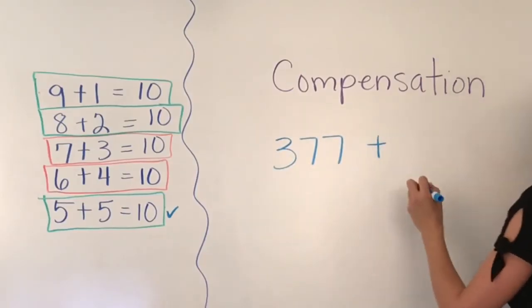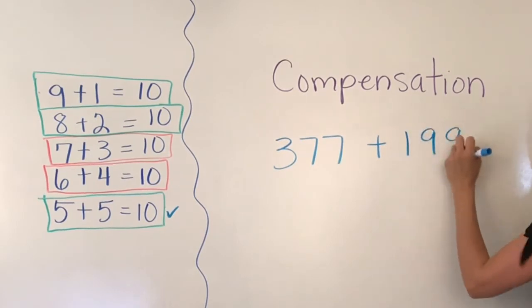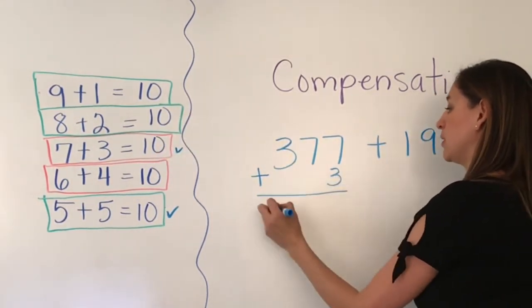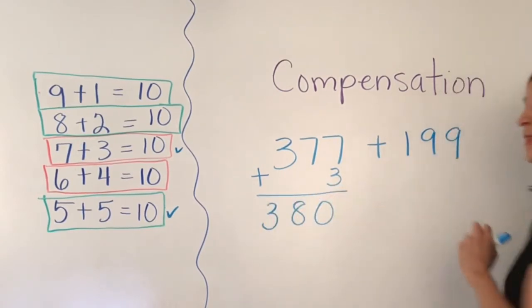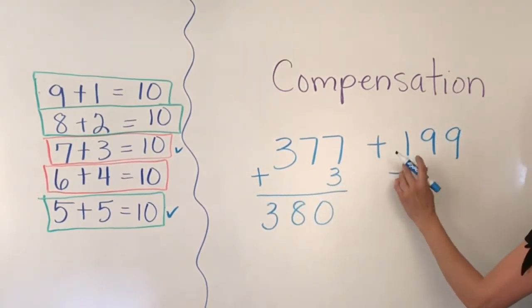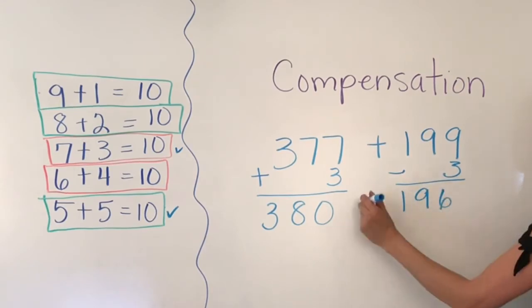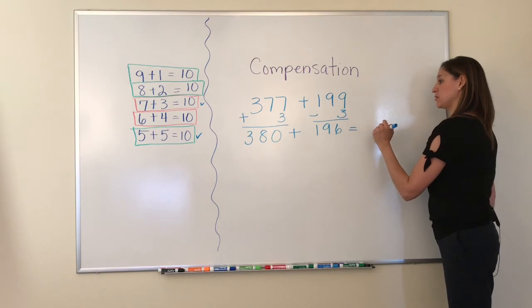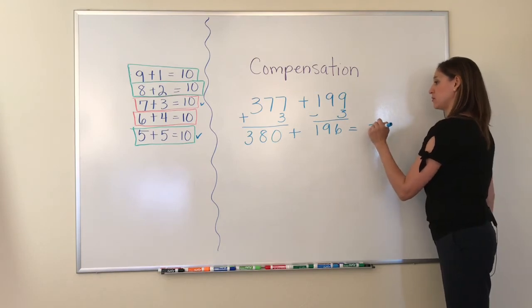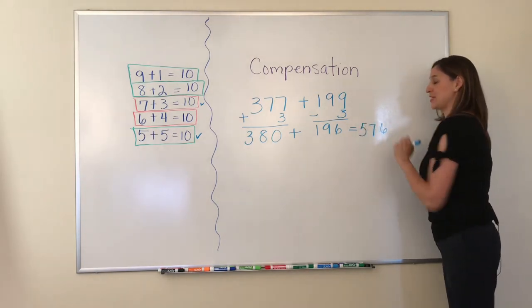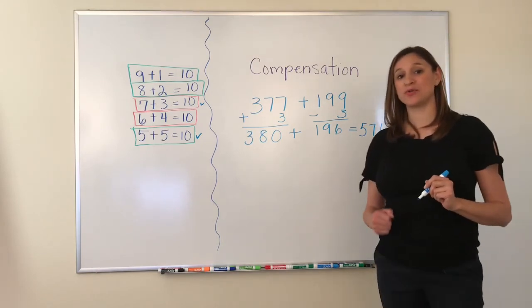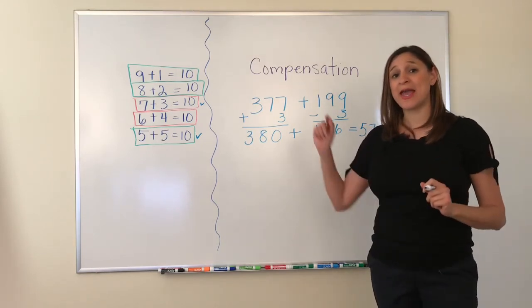For review purposes, I will show you how to compensate once again. Here I added another 3 to convert this into a friendly number, and I will subtract that 3 to the other side. My answer is 576. Now you know how to adjust and compensate.